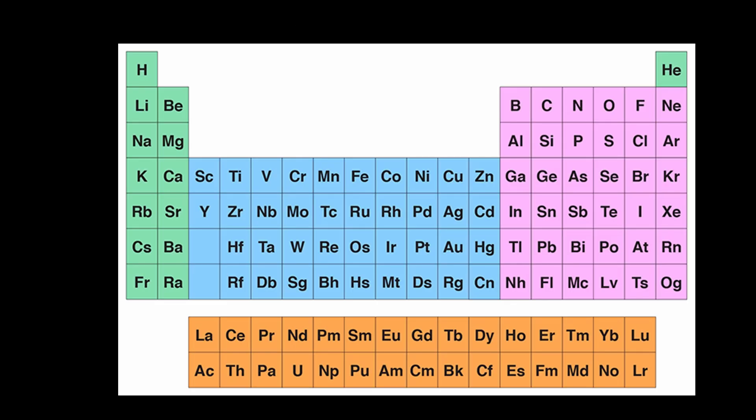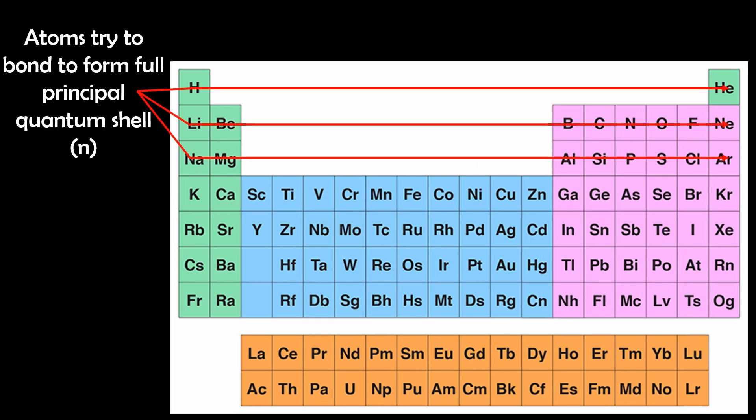So this applies to primarily these elements on the periodic table. But generally speaking, most atoms tend to bond to achieve a full principle quantum shell or angular momentum quantum shell, not necessarily always following the octet rule.